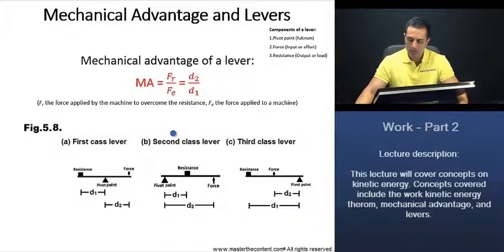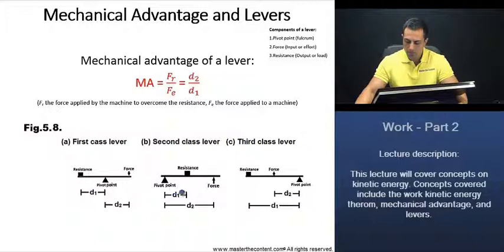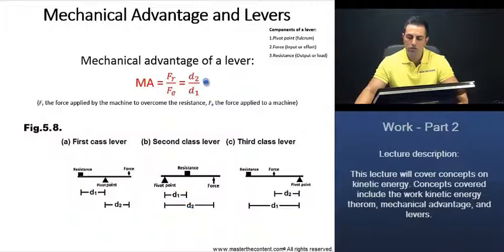Now let's take a look at second class levers. How do you distinguish a second class lever from the other two classes? Second class levers have the resistance between the pivot point and the force. In regards to mechanical advantage, since the resistance is between the pivot point and the force, D₂ is going to be larger than D₁ — meaning the force is farther from the pivot point than the resistance. Thus, the mechanical advantage is always going to be greater than 1 for second class levers.